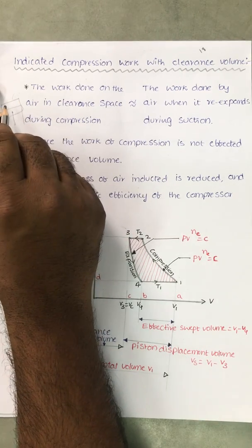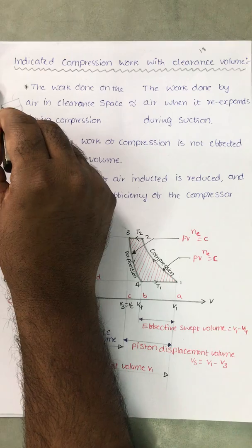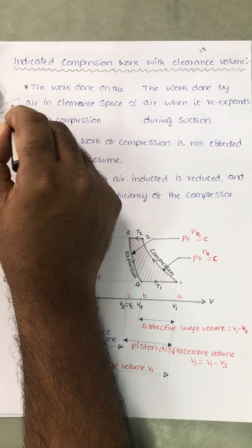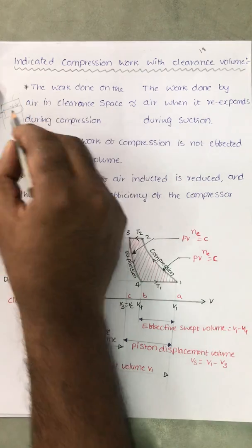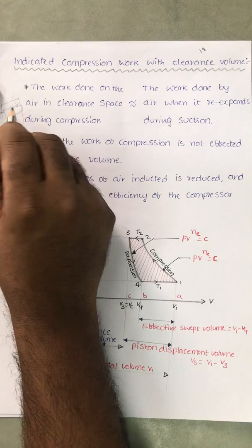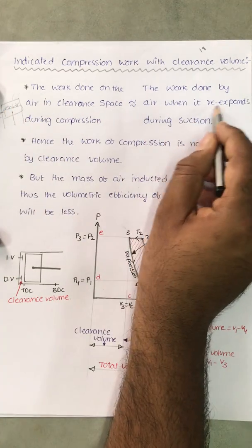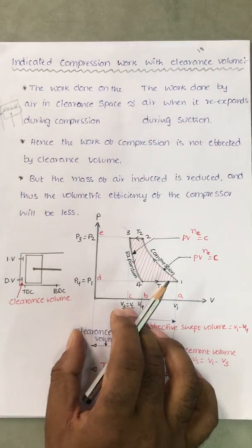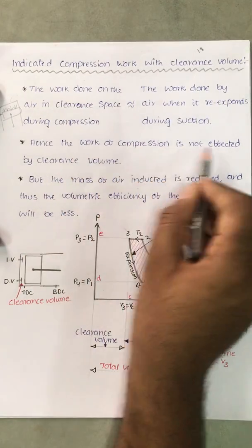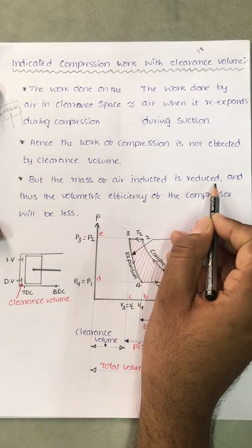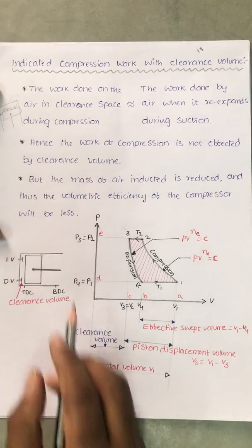The work done on the air in the clearance space during compression is almost equal to the work done by the air when it re-expands during suction. The compressed air in the clearance volume first re-expands, doing work on the piston, which equals the work done on that air during compression. Hence, the work input for compression is not affected by clearance volume, but the mass of air inducted is reduced, and thus the volumetric efficiency of the compressor will be less.